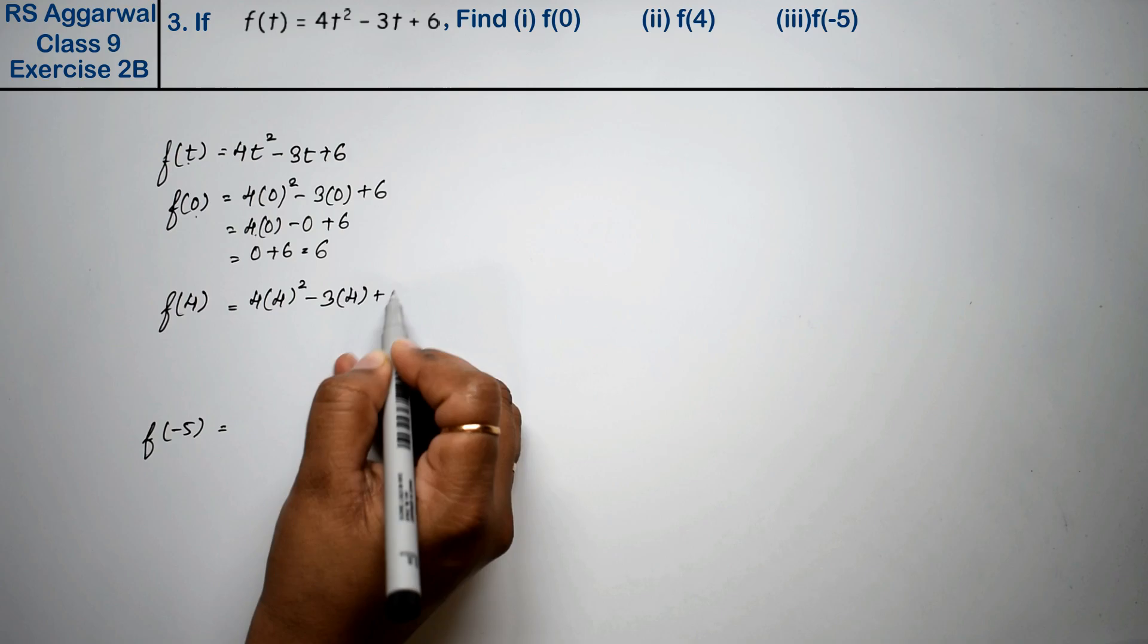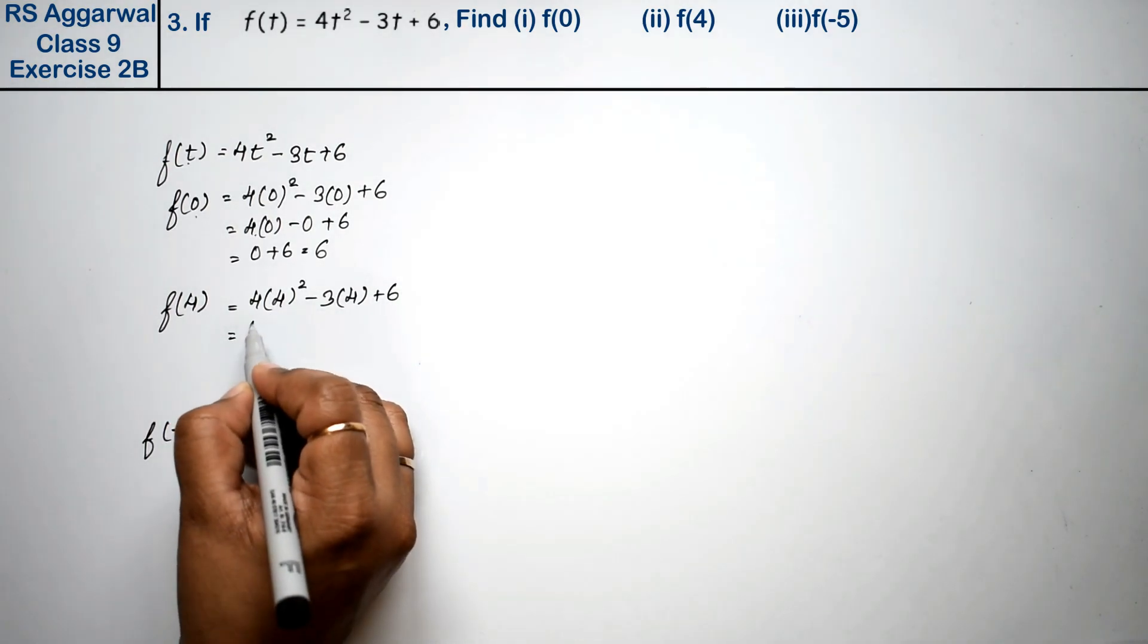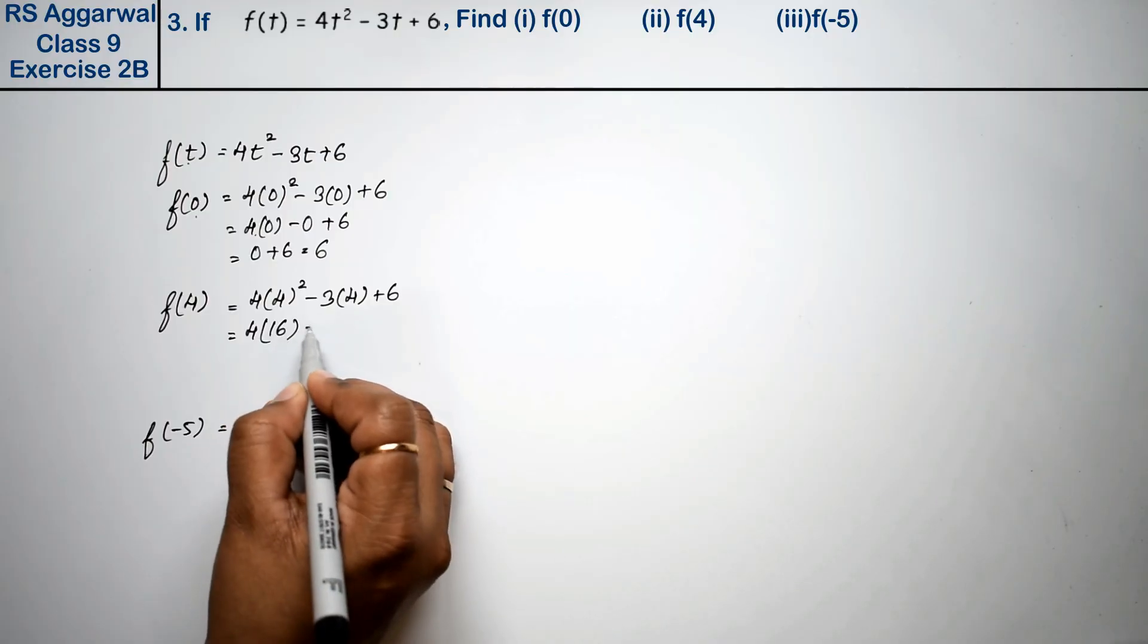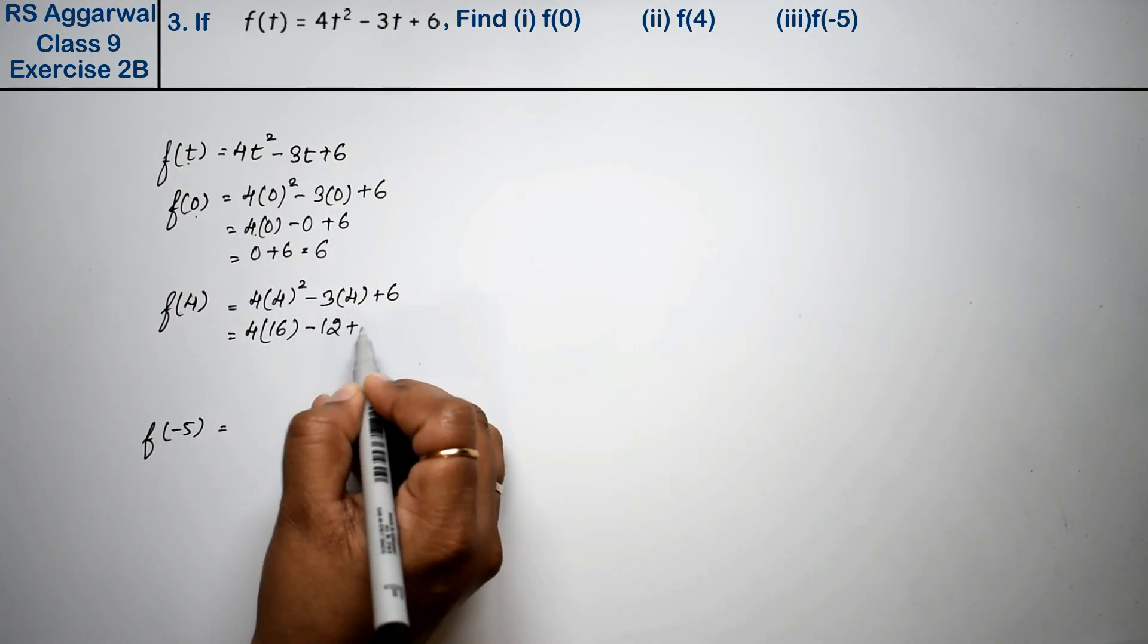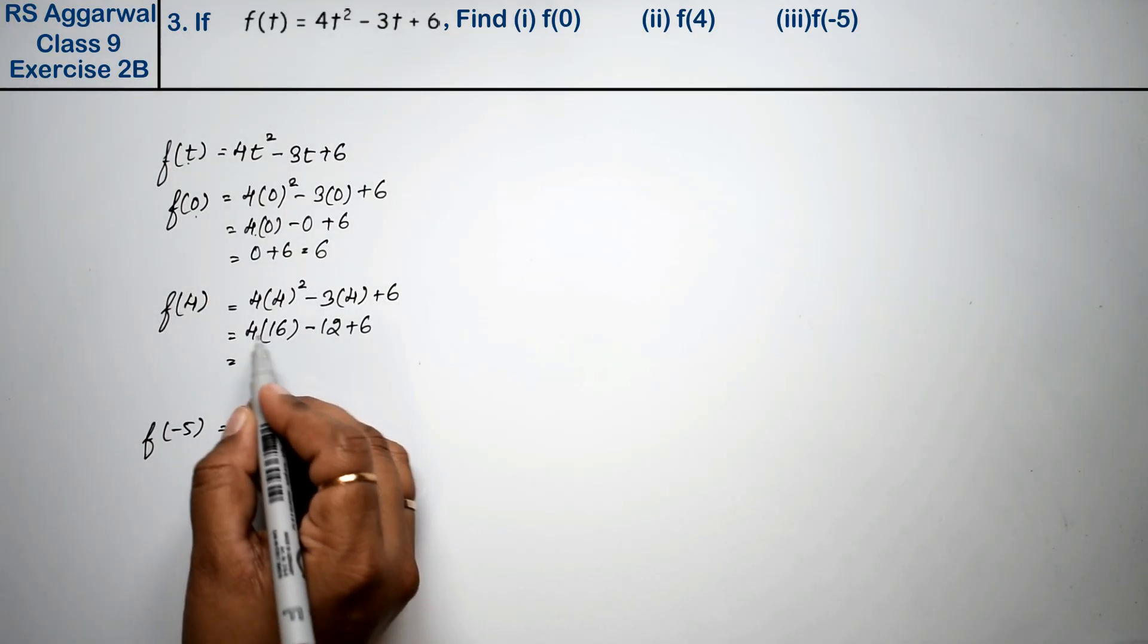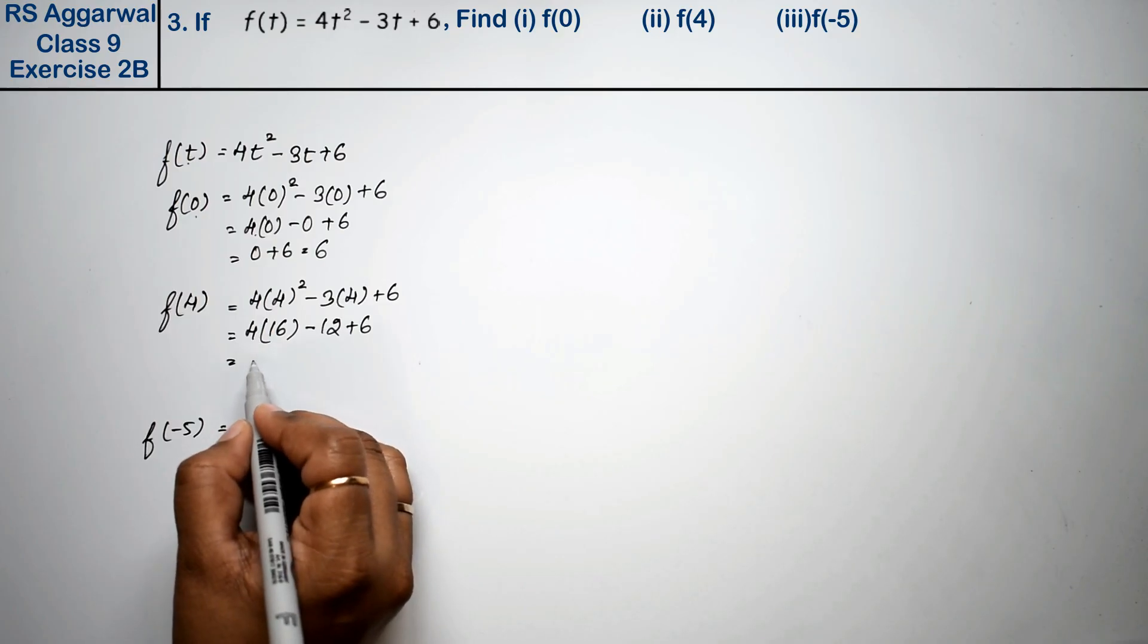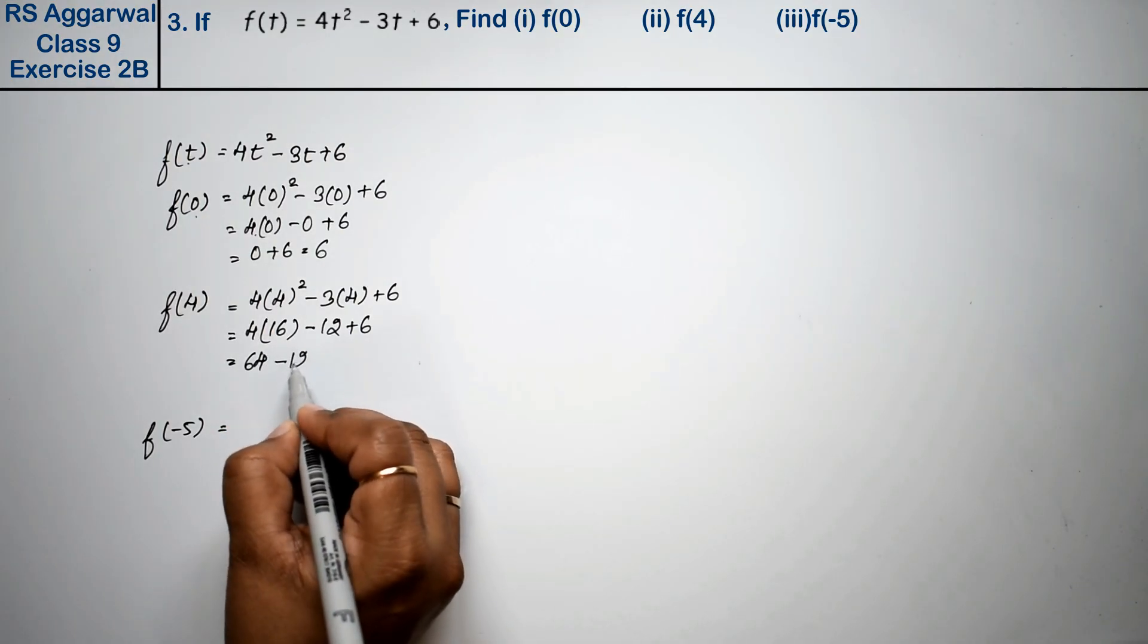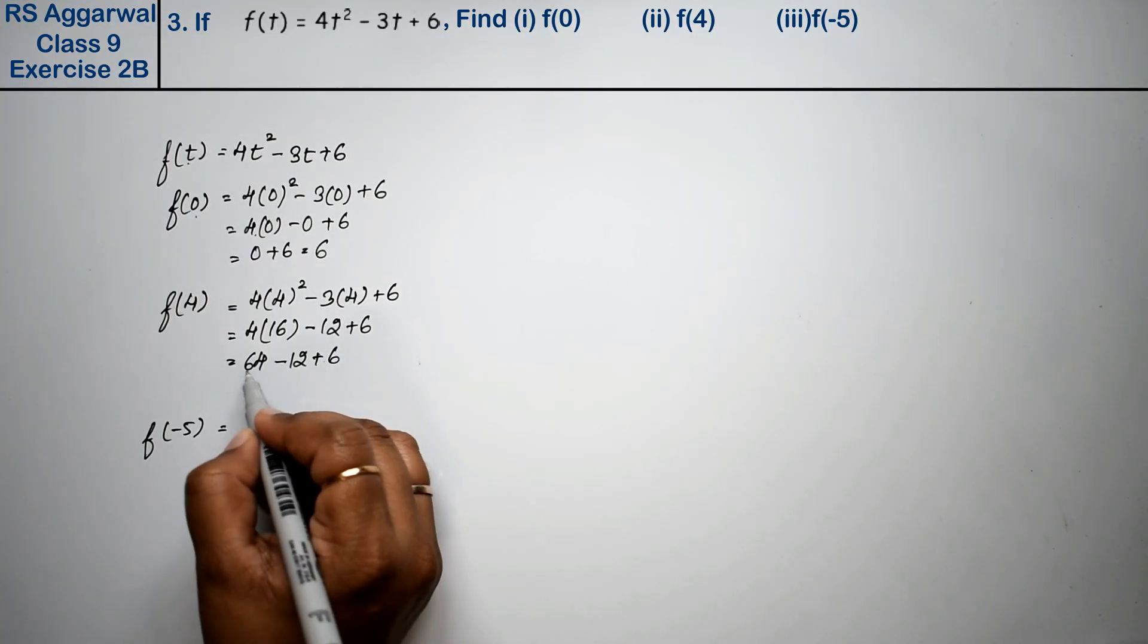This equals 4 times 16 minus 12 plus 6, which is 64 - 12 + 6. Plus signs mean we add them together.